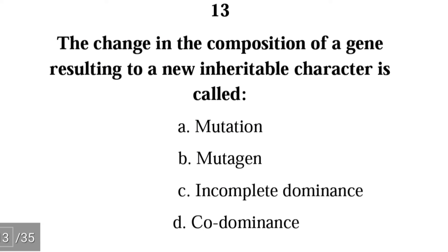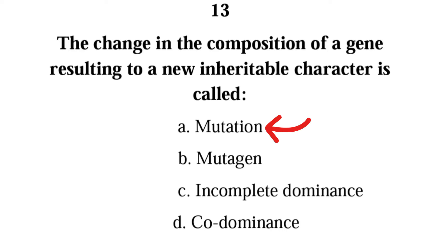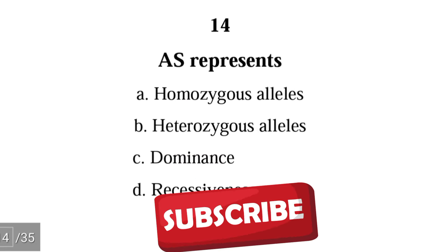Number thirteen: the change in the composition of a gene resulting in a new inheritable character is called — mutation, mutagene, incomplete dominance, or co-dominance. The correct answer is A, mutation. Mutation is a change that occurs in the gene that results in a different character that is inheritable.